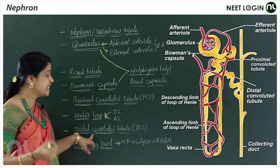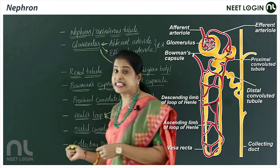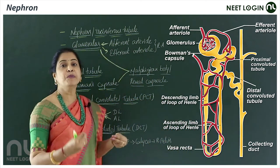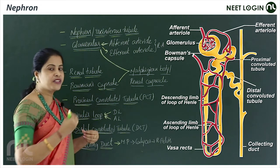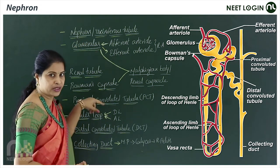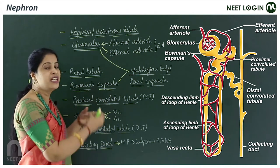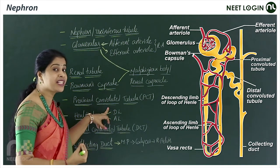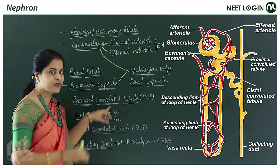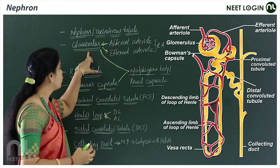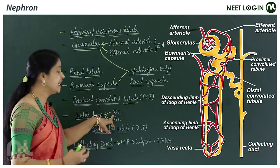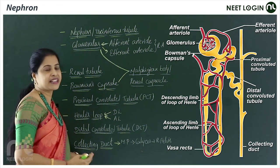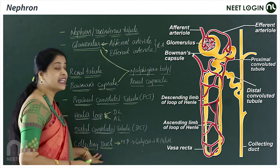Henle's loop continues as the distal convoluted tubule (DCT), also lined with simple cuboidal epithelium. To summarize the epithelium types: simple squamous is found in the glomerulus (endothelium), Bowman's capsule, and the thin segments; simple cuboidal with brush borders is found in the PCT; and simple cuboidal lines the DCT and collecting duct.